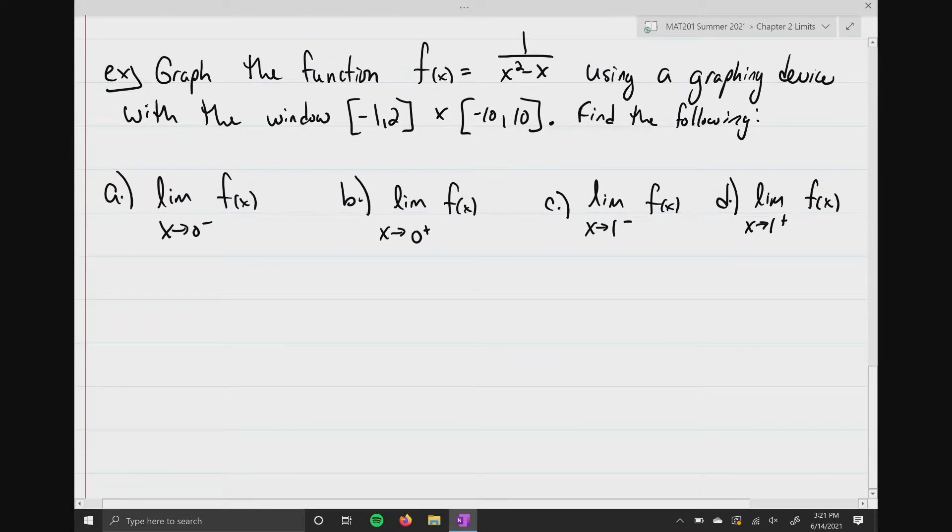So we're gonna graph the function f of x equals 1 over x squared minus x using some sort of graphing device with a window negative 1 to 2 by negative 10 to 10, and then we're gonna find the following limits. Anytime you see a situation like this where they're giving you window dimensions, these are intervals. That's gonna be my x interval, and this is gonna be my y interval.